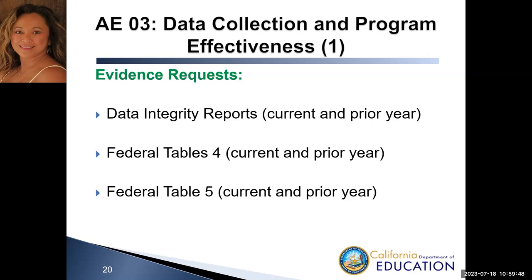The first evidence request is Data Integrity Reports, or DIR, current and prior year. This is a TE report showing a snapshot of all adult education students enrolled in your programs, including demographic data, pre/post-test pair data, and integrated education and training data. Federal Table 4, current and prior year, is a TE-generated report reflecting measurable skill gains by entry level — including percentage of students achieving measurable skill gains and total number of periods of participation per program. Federal Table 5, current and prior year, is a TE-generated report called Primary Indicators of Performance, containing reportable outcomes including employment, earnings, and post-secondary attainment.